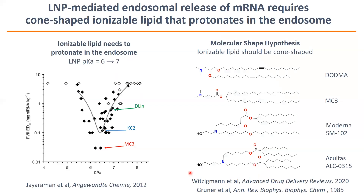It's generally thought that you need at minimum two features of an ionizable lipid for effective endosomal release. First, a pKa from six to seven — shown a long time ago in a publication with silencing RNA, with a very strong maximum in silencing around an LNP pKa of 6.4 to 6.5. The other feature that's become more apparent is that the shape of the tail should be cone-shaped. An early article by Hayes showed that the more double bonds you add, the more cone-shaped the tail becomes and the more endosomal release you get. This progresses to the modern lipids in current vaccines, where branching gives a morphologically evident cone-shaped ionizable lipid.